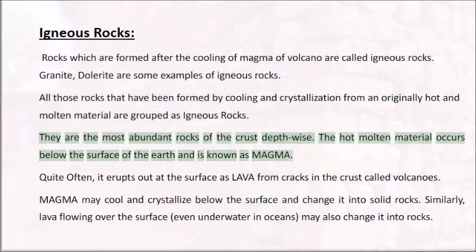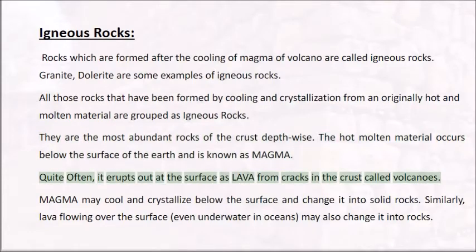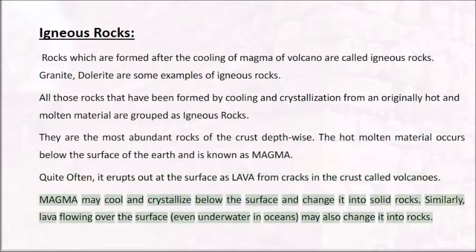Igneous rocks are the most abundant rocks of the crust. The hot molten material occurs below the surface of the earth and is known as magma. Quite often, it erupts out at the surface as lava from cracks in the crust called volcanoes. Magma may cool and crystallize below the surface and change into solid rocks. Similarly, lava flowing over the surface, even underwater in oceans, may also change into rocks.